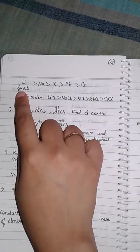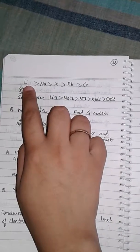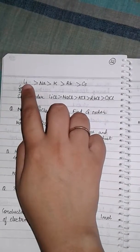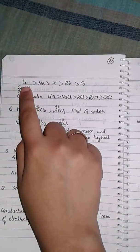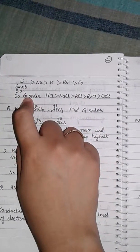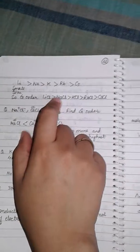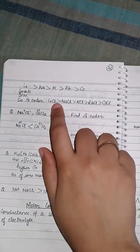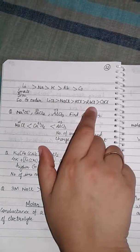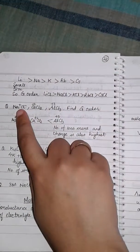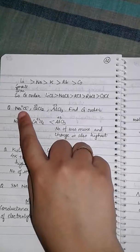The mobility will be highest for lithium, then in decreasing order. Because of this small size, lithium has higher mobility. So the conductance order will be the same: lithium chloride will have highest conductance, then sodium chloride, then potassium, then rubidium, and then cesium chloride. Next question.